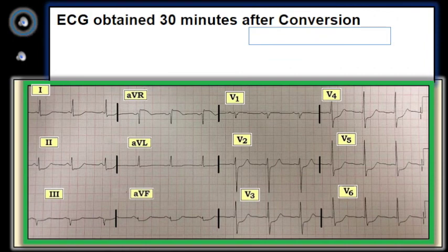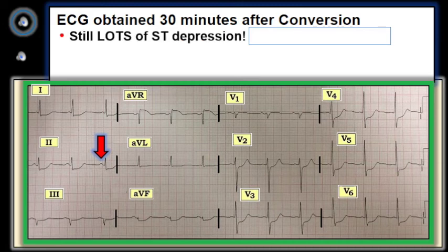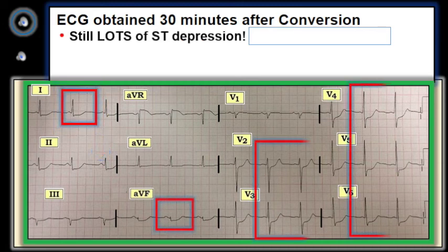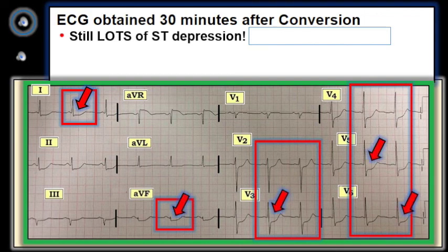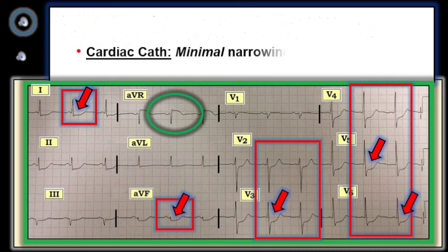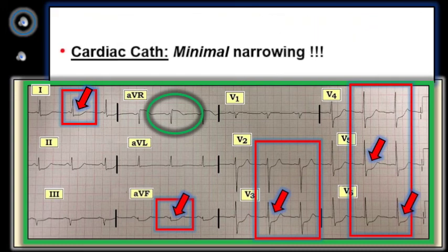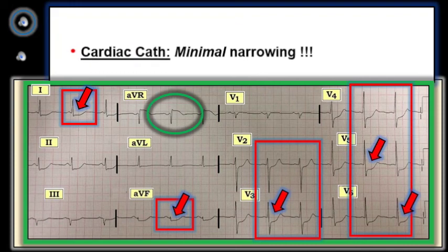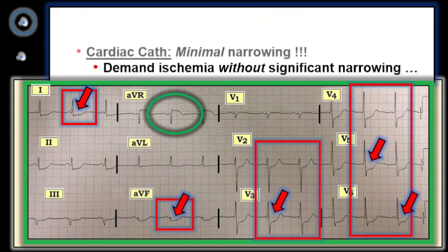This last ECG was obtained 30 minutes after conversion to sinus rhythm. At that time, the patient was stable and no longer having chest pain. Although not quite as marked as during the tachycardia, there is still much ST depression in almost all leads except AVR. Surprisingly, cardiac cath showed no more than minimal obstructive coronary disease without need for acute reperfusion. The lesson learned was that even marked diffuse ST depression is not always indicative of severe coronary disease, even when ST depression persists after the rate slows down.